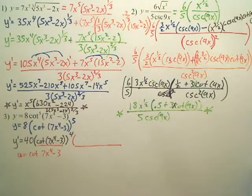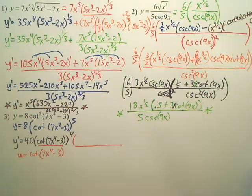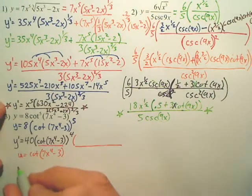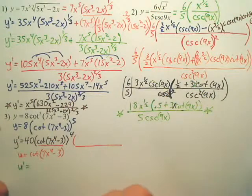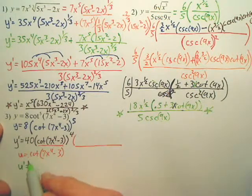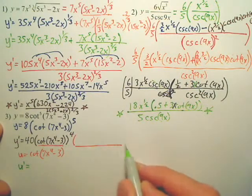So, define u prime. I need parentheses. What will u prime be? Well, u prime, you derive the outside. Do you understand this is the chain rule too? When you're deriving u, the answer is going to go here.